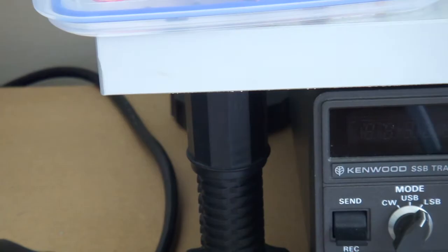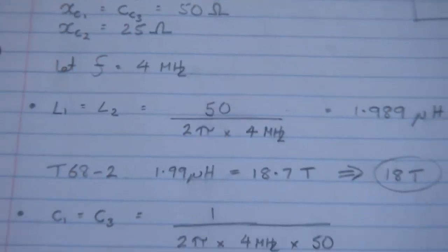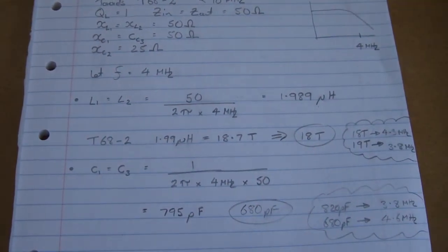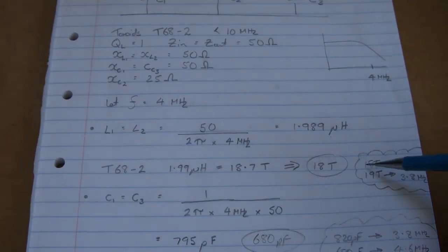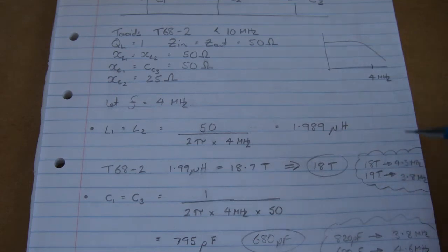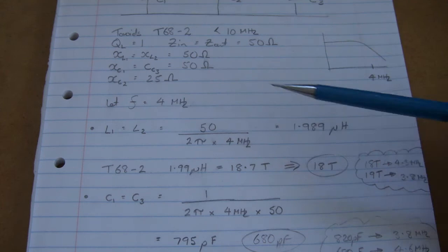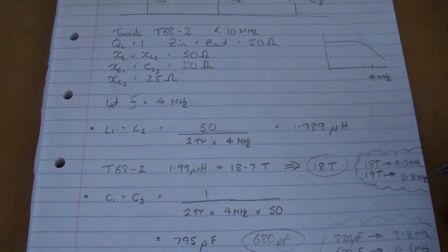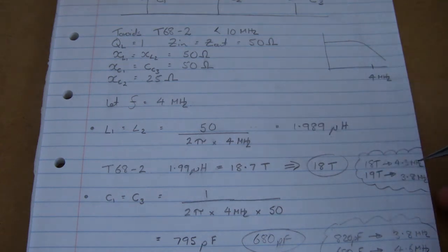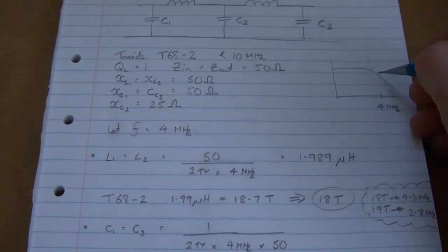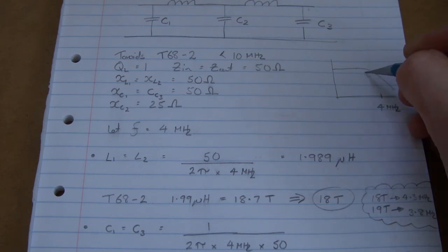And why I've decided to go slightly down, if I just come back to here again, what I don't want to do, or more the point, if I'd rounded up to 19 turns, then the frequency at which that would equal 50 ohms would be 3.8 megahertz. By going down to 18 turns, the frequency at which that would be 50 ohms turns out to be 4.3 megahertz.